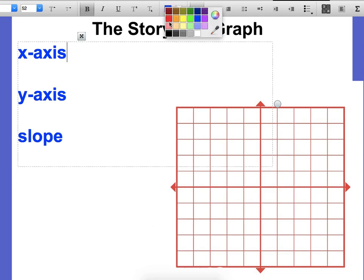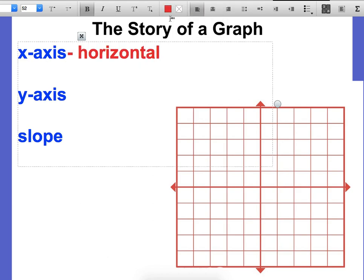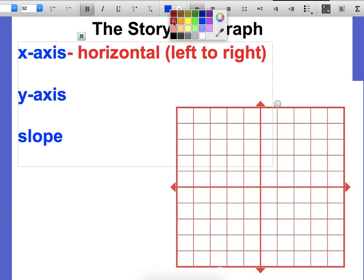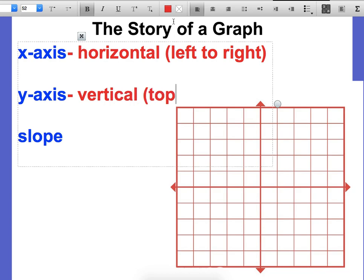Remember that the x-axis is horizontal. That means that it goes from left to right. The y-axis we have to remember is vertical. That means that it runs from top to bottom.